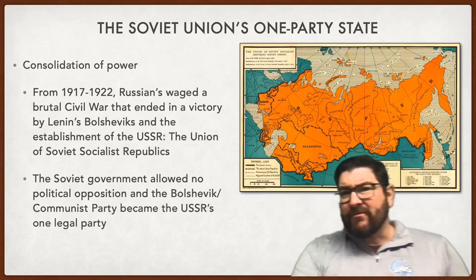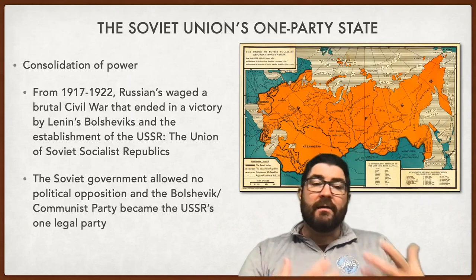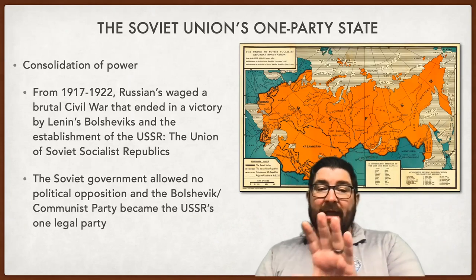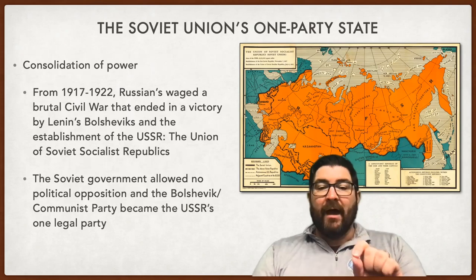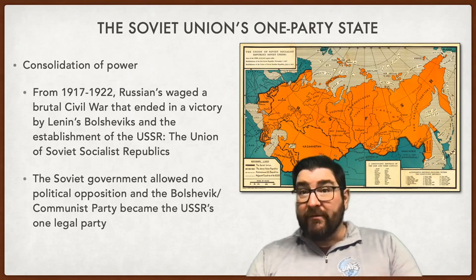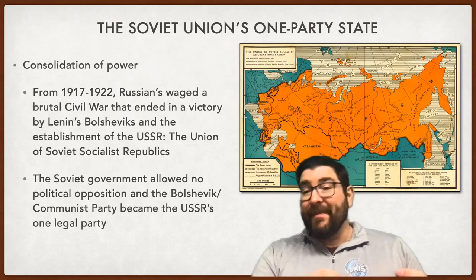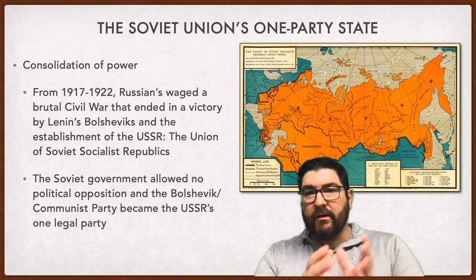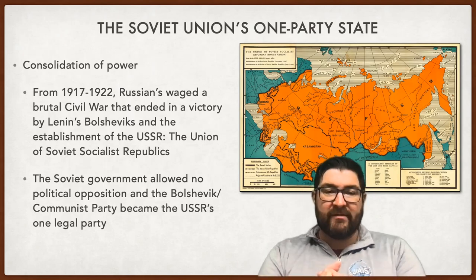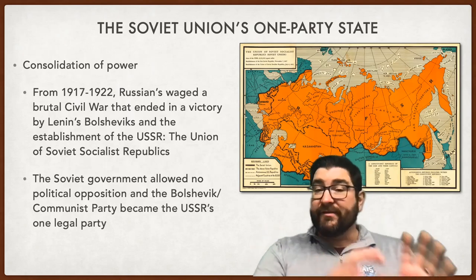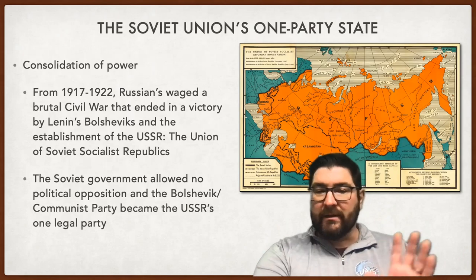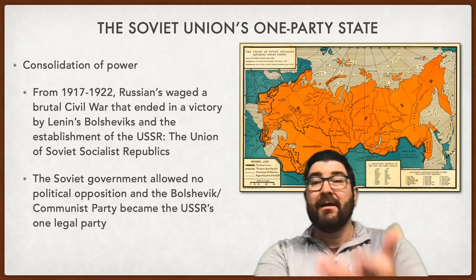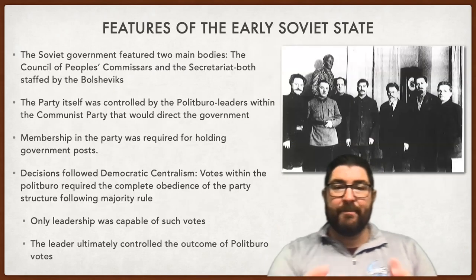From 1917 to 1922, Lenin will consolidate his power following a violent civil war that will end with a victory of Lenin's Bolsheviks and the establishment of a new state — the Union of Soviet Socialist Republics. In this new state, the Soviet government would allow no political opposition to the Bolshevik Party, later known as the Communist Party.